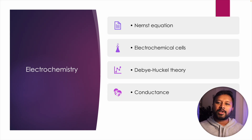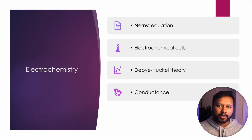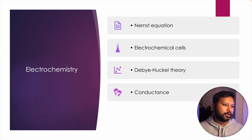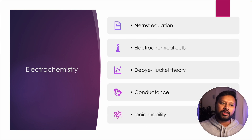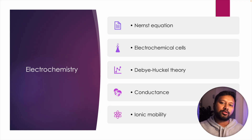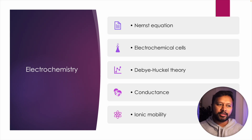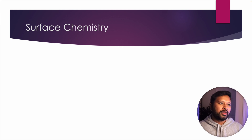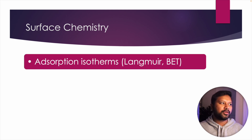Continuing with electrochemistry: conductance and its relationship with resistance and cell constant are important. At the end, ionic mobility — there is a simple equation relating ionic mobility to the concentration of different ions in solution, but it can be asked in different forms, such as how the ionic mobility of a strong acid versus a weak acid is affected when more than one ion is present in solution. Try to cover all of these if you're preparing electrochemistry.